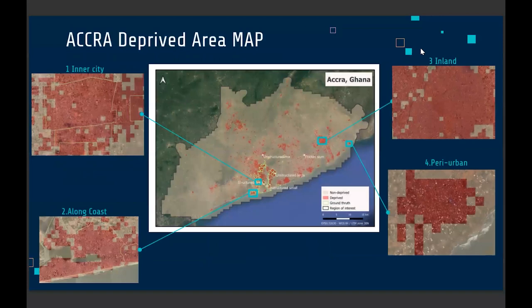These are some of the results from the models, and it was quite interesting to see how the models were able to pick up new areas. The green areas represent the ground truth data used to train the model. In most cases, the model predicted those areas correctly, and we also realized it was detecting other areas we didn't know of. It also tends to have some issues related to deprivation indicators from OSM and other data sources.